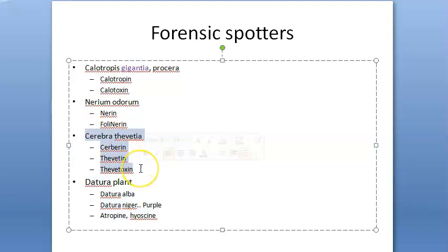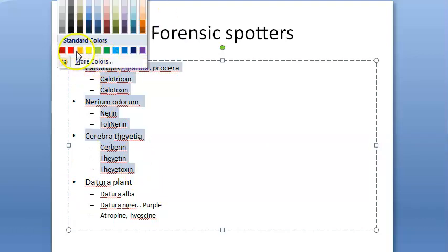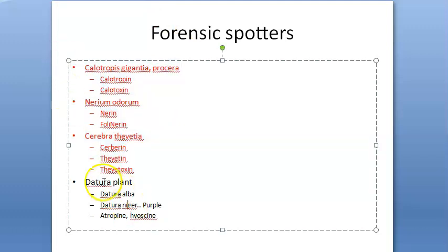For Cerbera thevetia, the medico-legal importance is similar: suicidal, homicidal, accidental, criminal abortion, arrow poison, and cattle poison. Note that for all three oleander-type plants, arrow poison and cattle poison are written, but for datura it is more associated with criminal abortion and aphrodisiac — arrow poison and cattle poison are not written for datura.